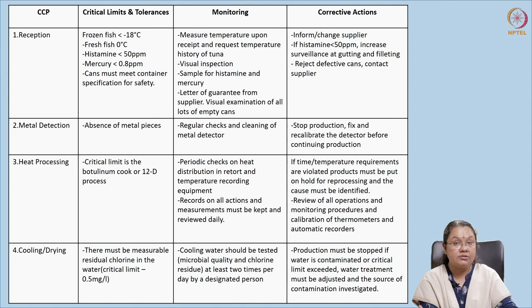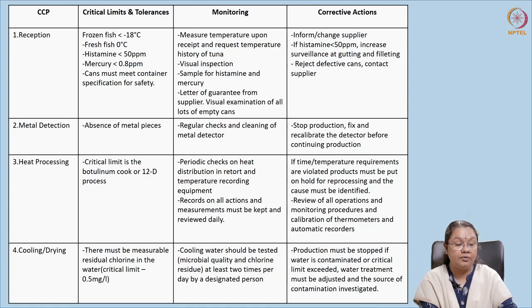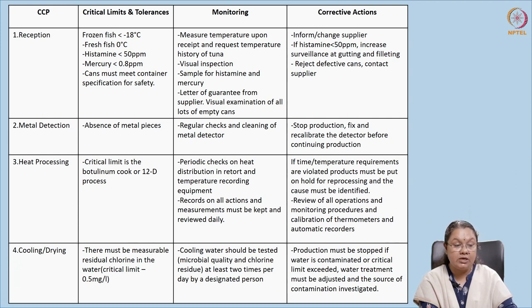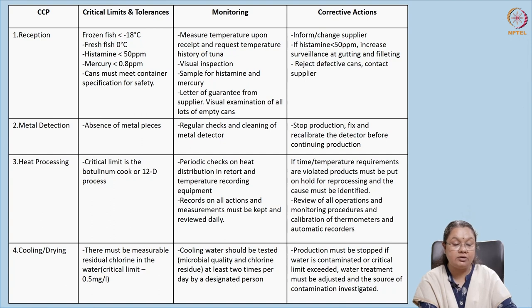After heat processing, since Clostridium botulinum is a spore-forming bacteria it goes into the spore stage, and if given the right temperature and environment it will start growing again. Therefore we cannot reduce the temperature slowly from 121°C — this would allow bacteria to come out and multiply. So we give a cold shock through the cooling and drying process. In cooling, water comes in contact with the container surface. The chlorine level must be correct; the critical limit is set at 0.5 mg per liter. Chlorine in the cooling water must be checked at regular intervals by designated personnel, and corrective actions taken as required.